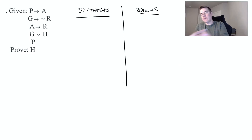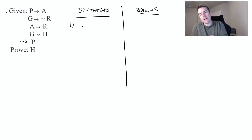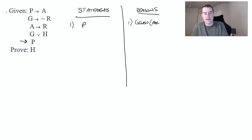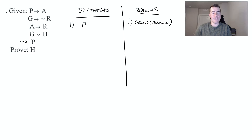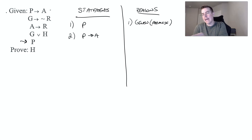For this problem, we have P as a single letter, so the first thing I'm going to write down is that P is true. The reason is that's a given — or some of you might write that as premise. Then I'm going to look for something else that has a P in it. I can see they gave us that P implies A, and that was another given statement.